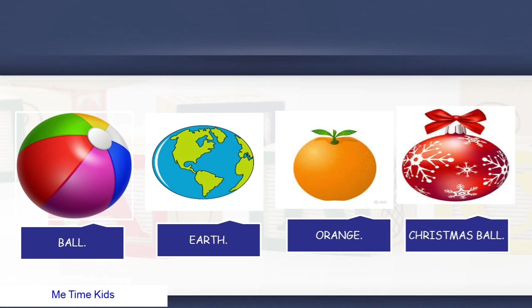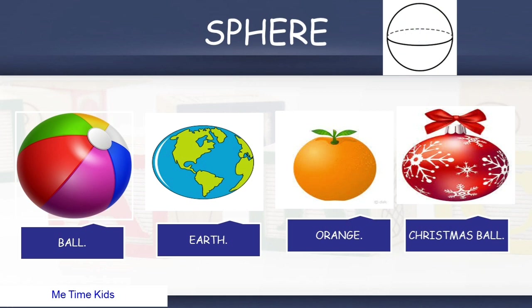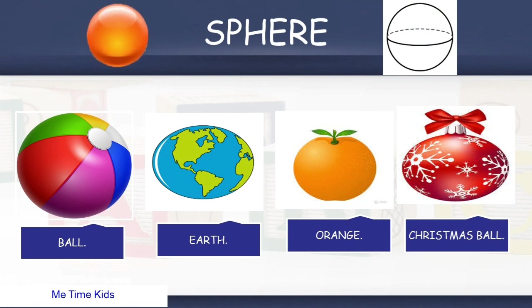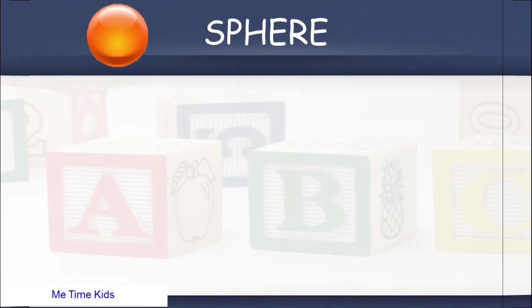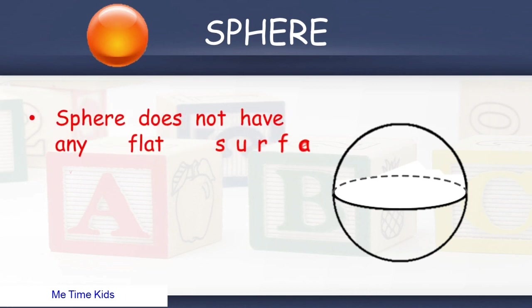Next is sphere. Some examples of sphere are Ball, earth, Christmas ball, and orange. Let's learn about its properties. Sphere does not have any flat surface, vertex, or edge.